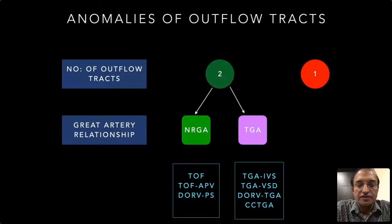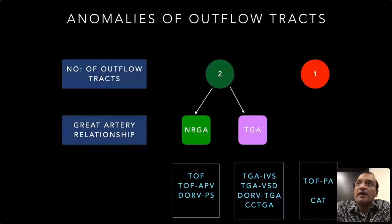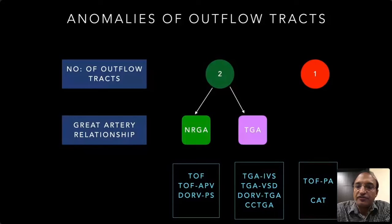There is also the entity called a single outflow tract, and there are only two conditions: tetralogy of Fallot with pulmonary atresia — where the only outflow is the aorta — and common arterial trunk, or truncus arteriosus. From now on, do not label any condition with a single outflow tract as common arterial trunk. That is wrong, because many people incorrectly label pulmonary atresia as common arterial trunk as well.